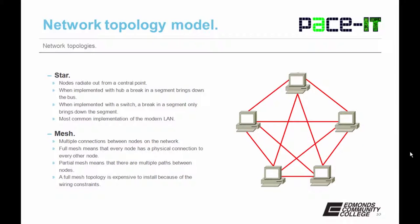Then there's the mesh. A true mesh topology — a full mesh — is when all nodes are connected to all other nodes. Full meshes aren't very common because they are expensive and difficult to maintain, but it's common to find partial meshes, where there are multiple paths between nodes. Everyone knows at least one partial mesh network: the internet.